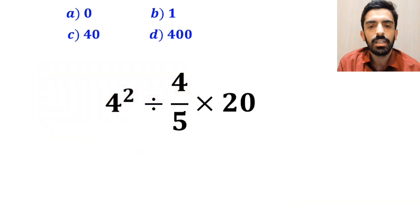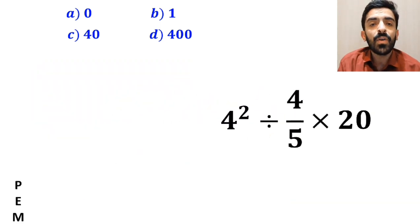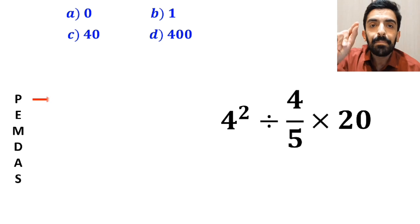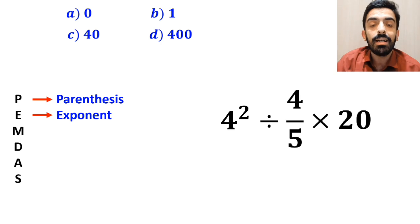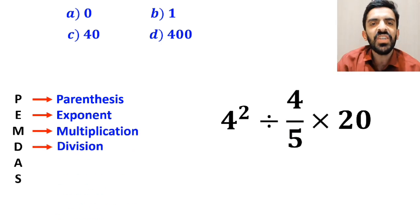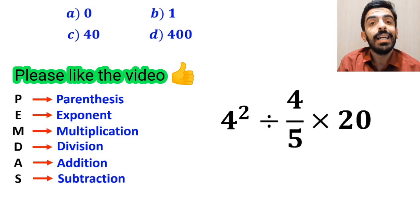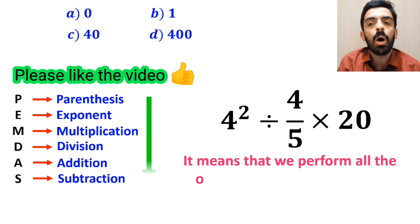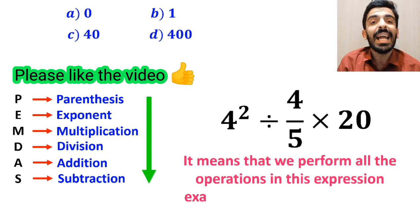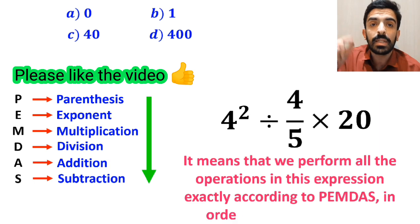To solve this question we must follow the PEMDAS rule. P stands for parenthesis, E stands for exponent, M stands for multiplication, D stands for division, A stands for addition, and S stands for subtraction. It means that we have to perform all the operations in this expression exactly according to the PEMDAS rule in order from top to bottom.